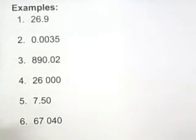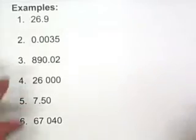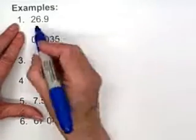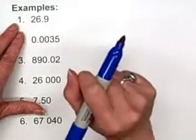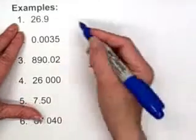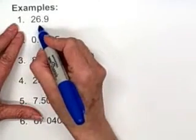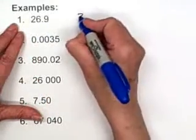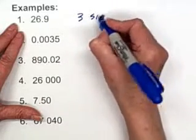Okay, let's do some examples here. We have 2.69. We don't have any zeros to deal with. So we count all three of these digits. So here we have three significant figures.